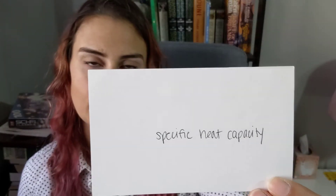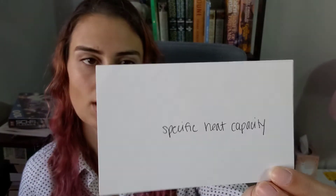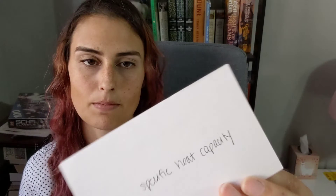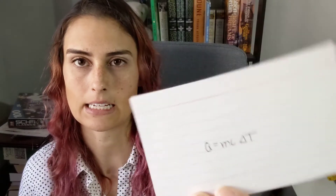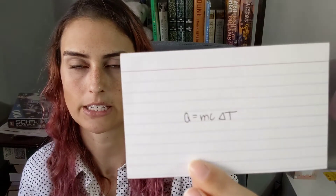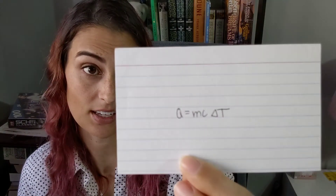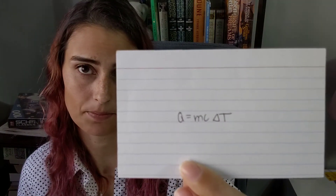Specific heat capacity is defined by Q equals mc delta T, where little c is the specific heat capacity.